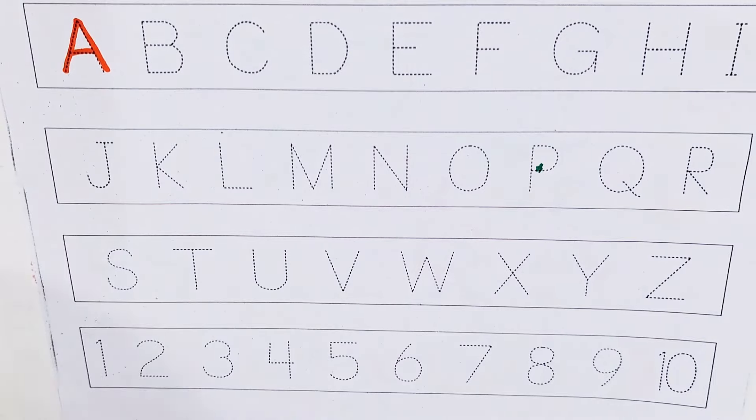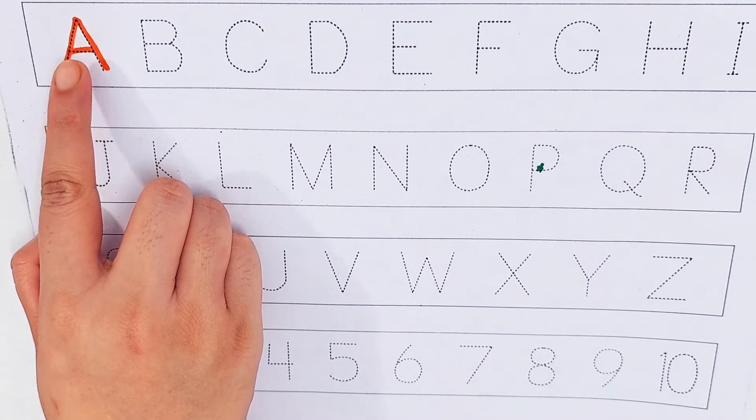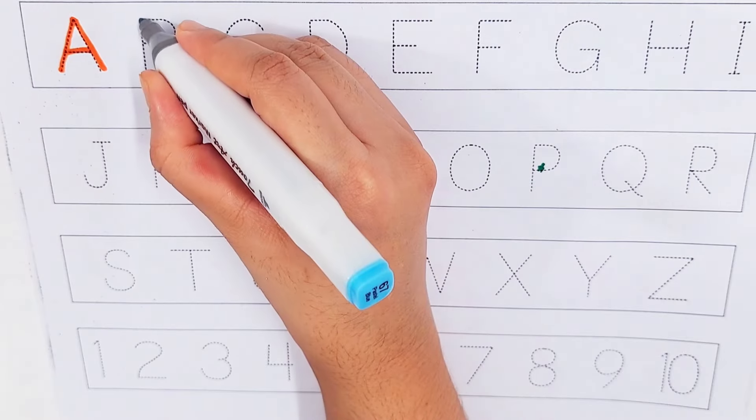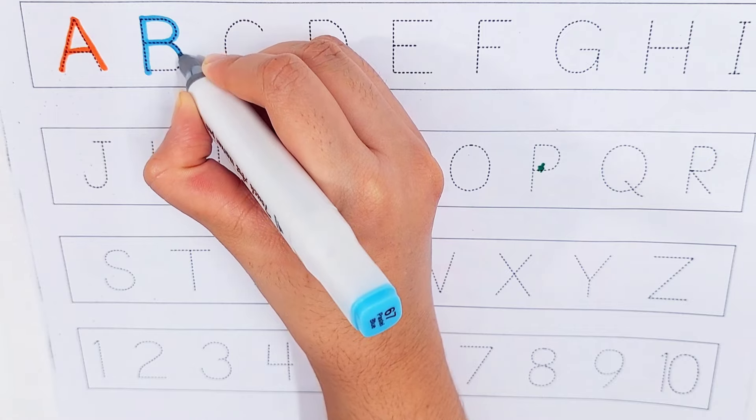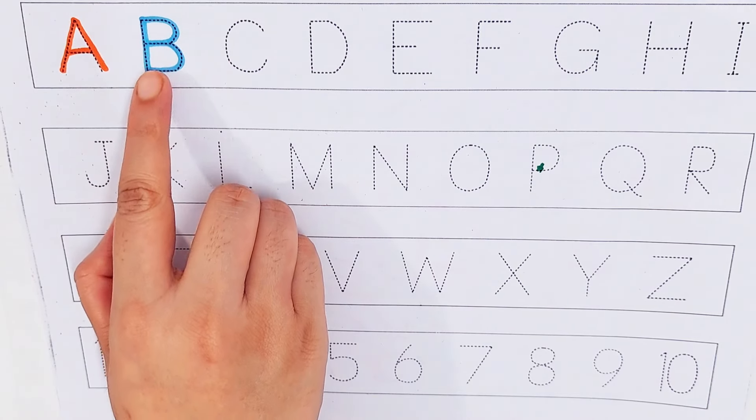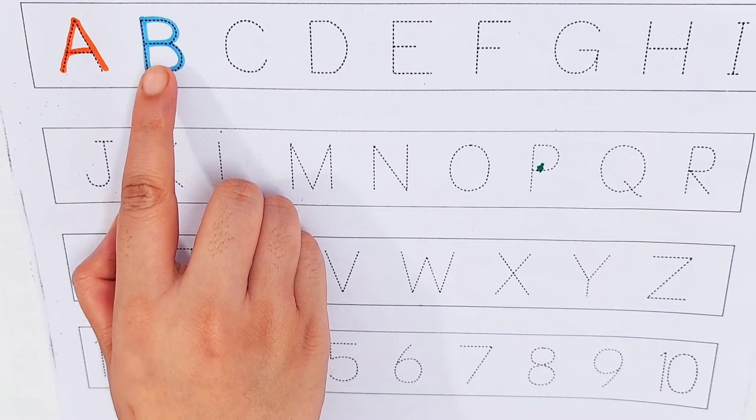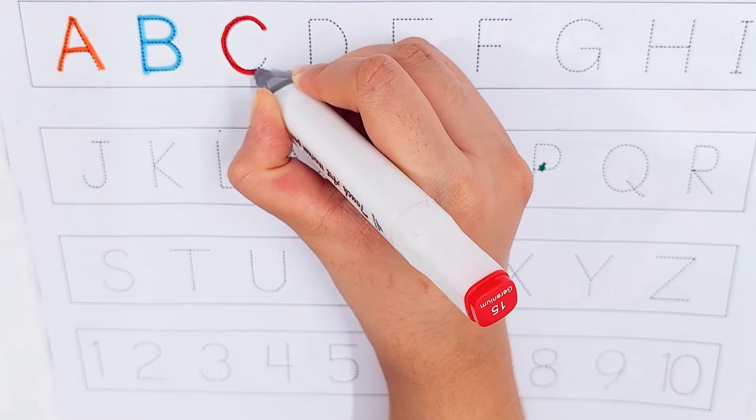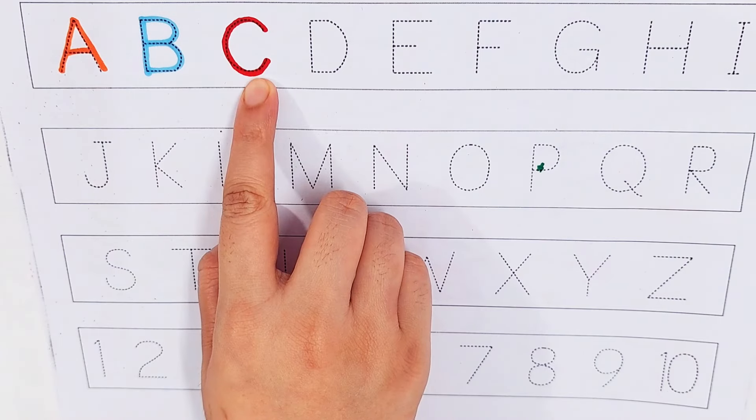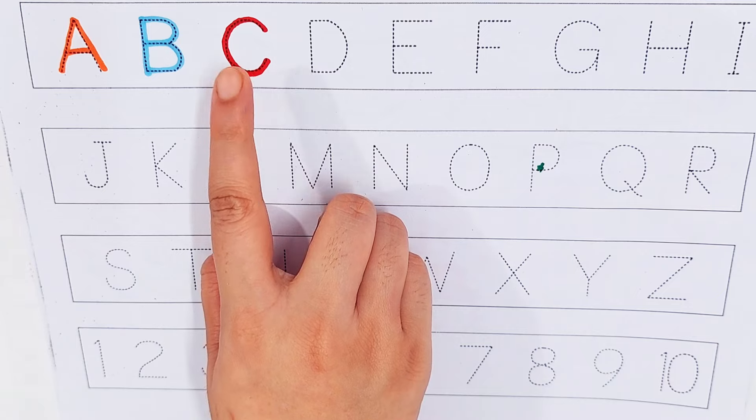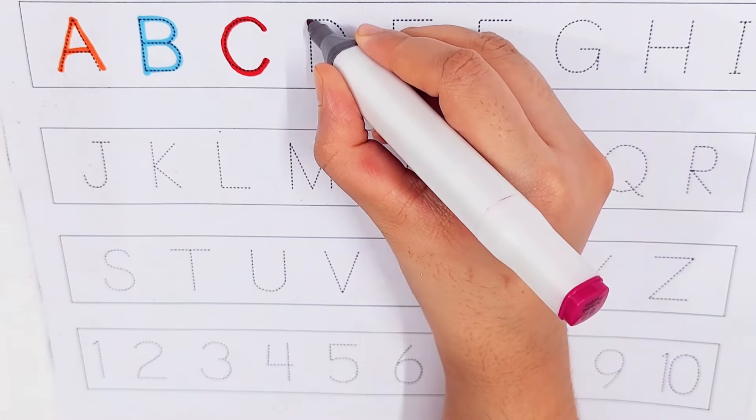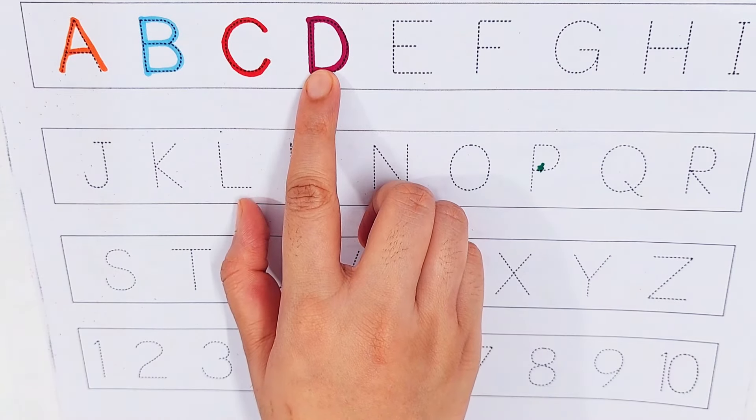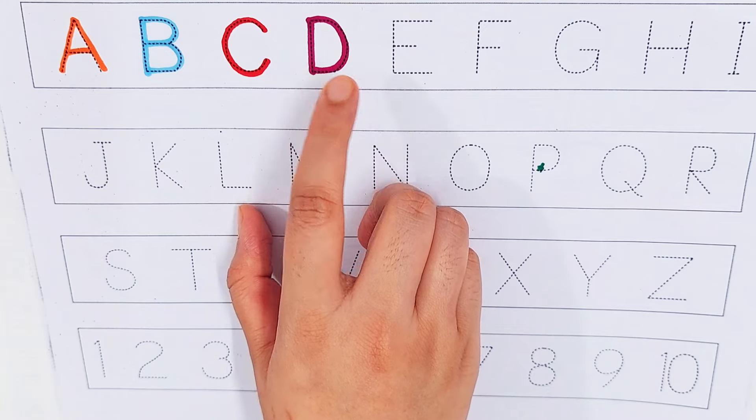A, A for ant, A for apple, A for eggs, sky blue color. B, B for bat, B for ball, B for box, red color. C, C for candy, C for chocolate, C for car, purple color.